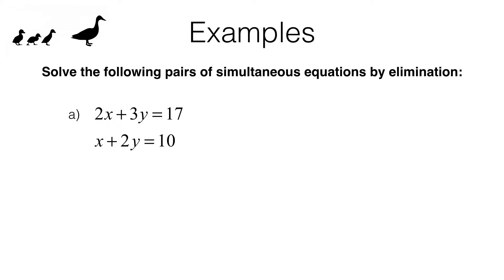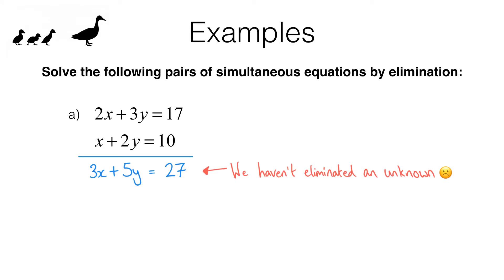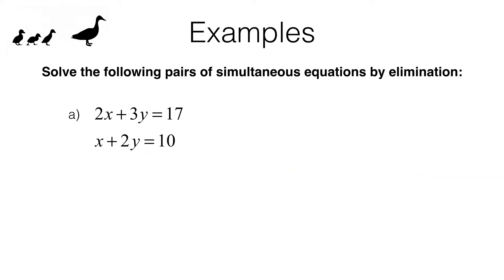Here we've got the equations 2x plus 3y equals 17 and x plus 2y equals 10. If you try to add these two equations together, what you get on the left hand side is 3x plus 5y. So you don't eliminate the x's or the y's, and that's not very helpful. Multiplying one equation through by negative 1 still doesn't eliminate either variable. What I'm going to do is multiply the second equation through by negative 2, giving me a negative 2x which will eliminate with the 2x.